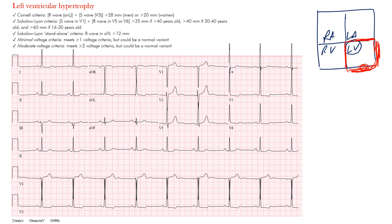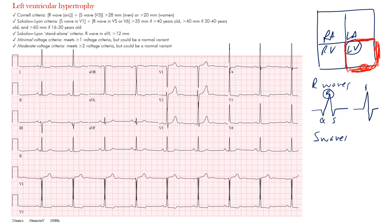Most criteria involve R waves or S waves, so it's important you understand what an R wave and S wave are. The R wave is the first positive deflection of the QRS complex. If you have a complex with a negative deflection, positive deflection, then negative deflection, that's a Q wave, then an R wave, then an S wave. An S wave is the first negative deflection after an R wave. Make sure you're not looking at the depth of a Q wave when measuring S waves.